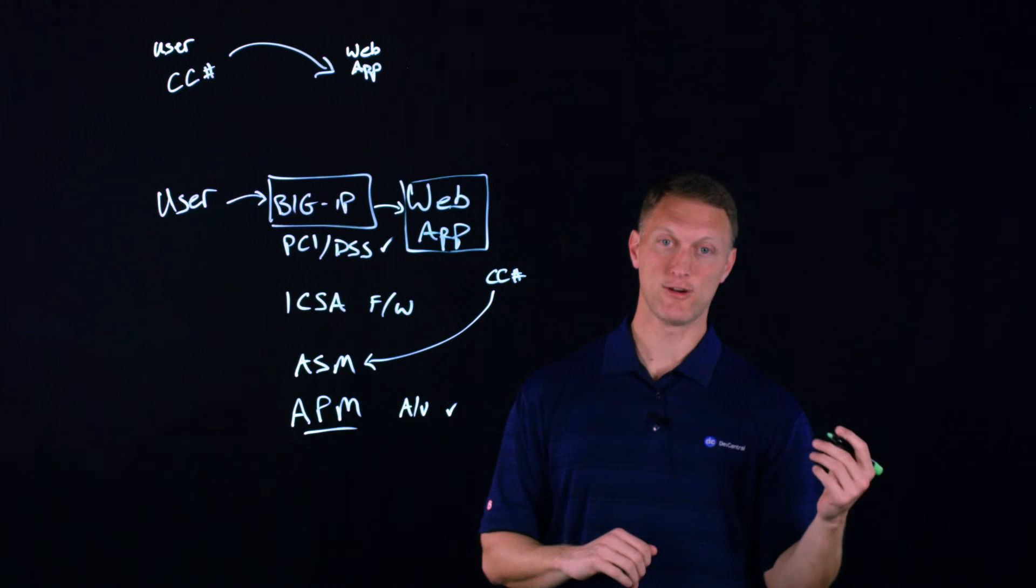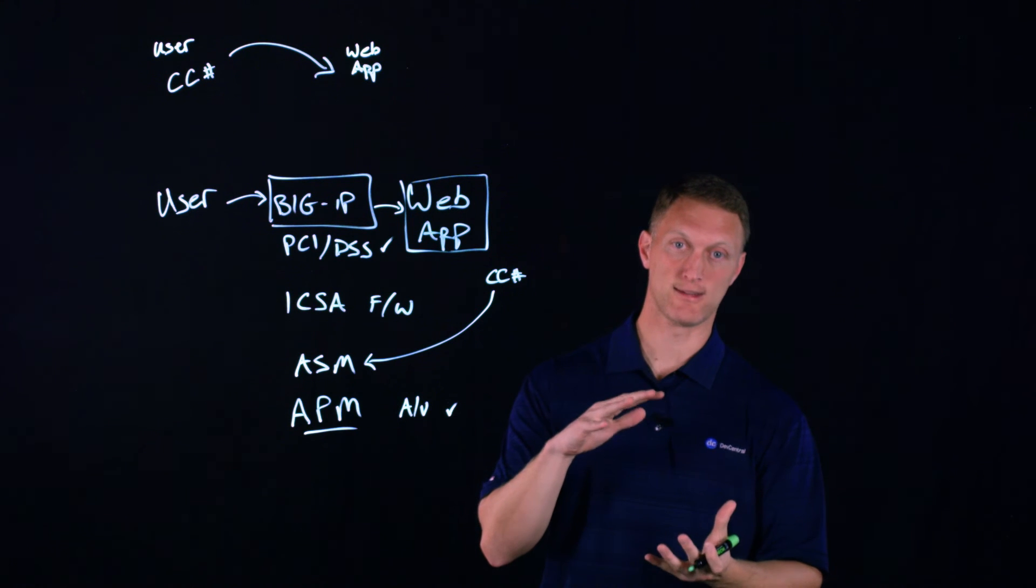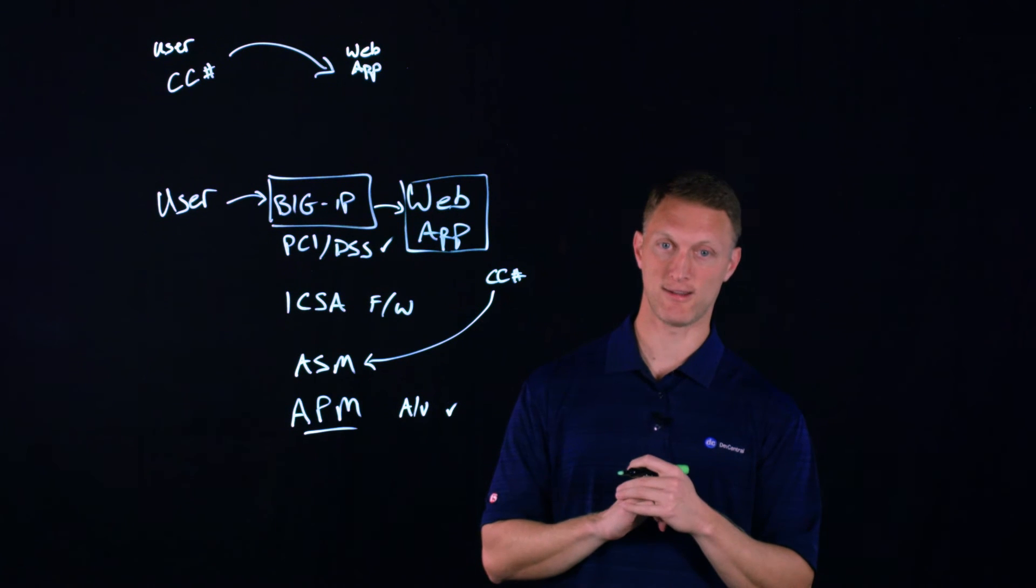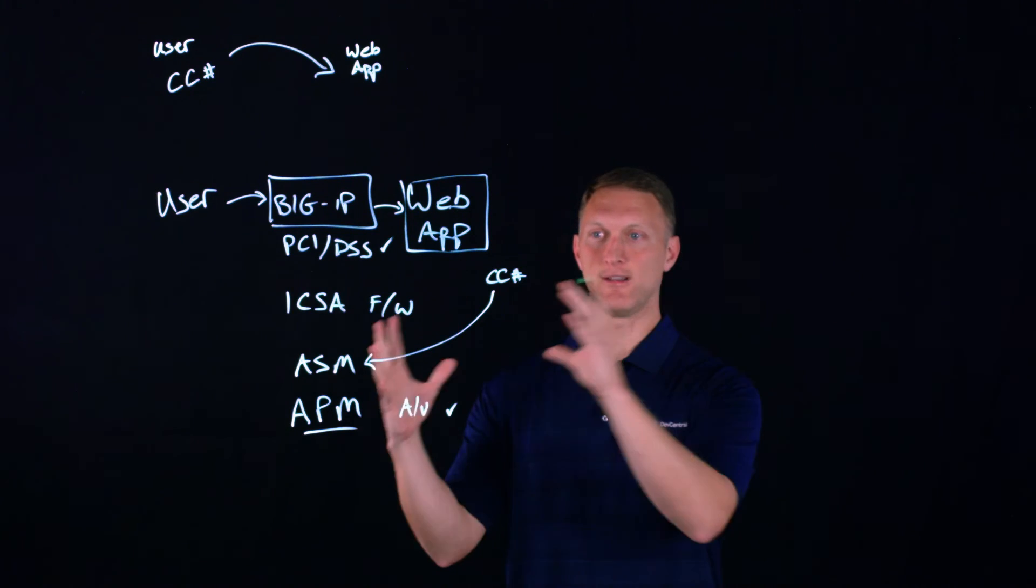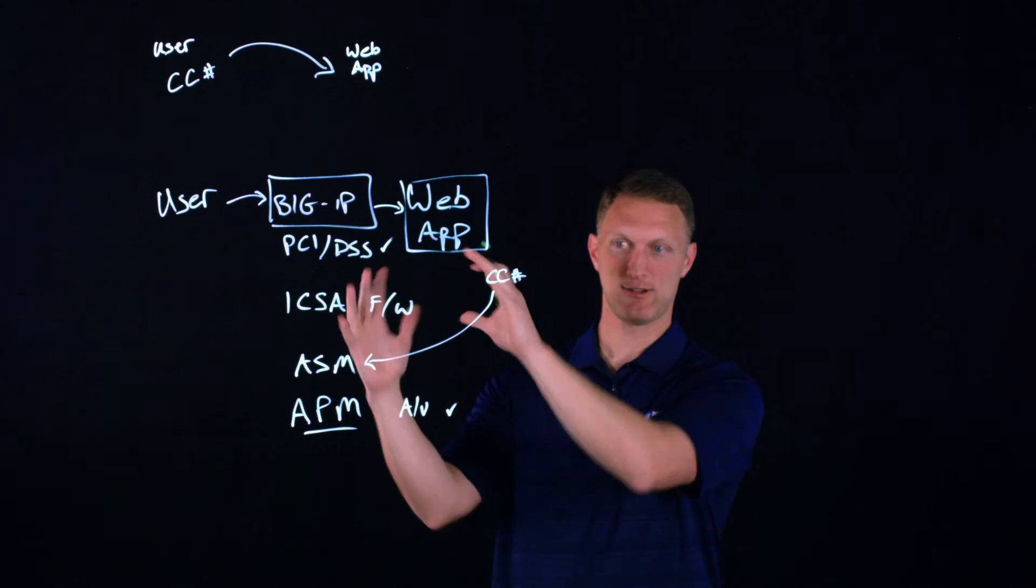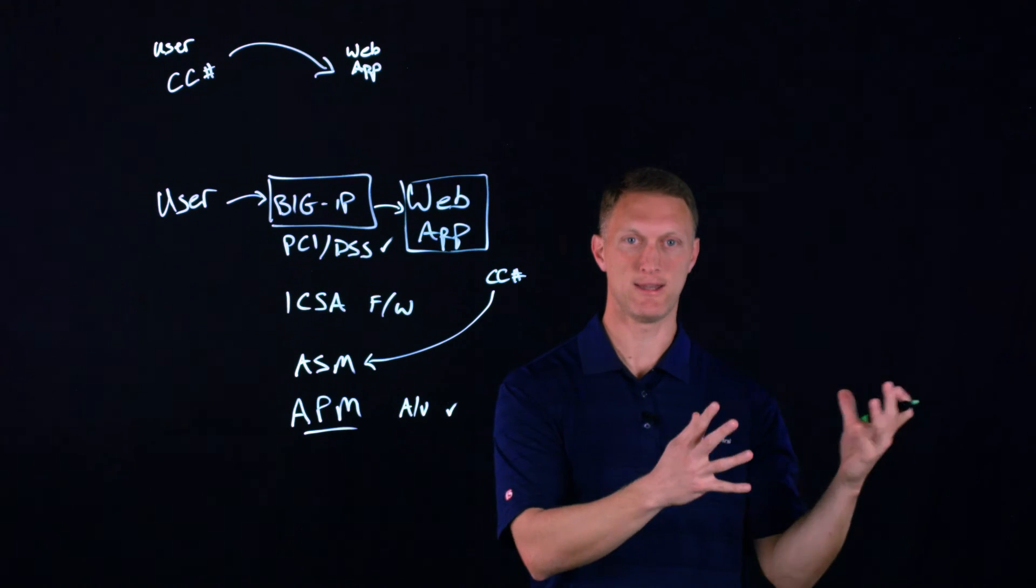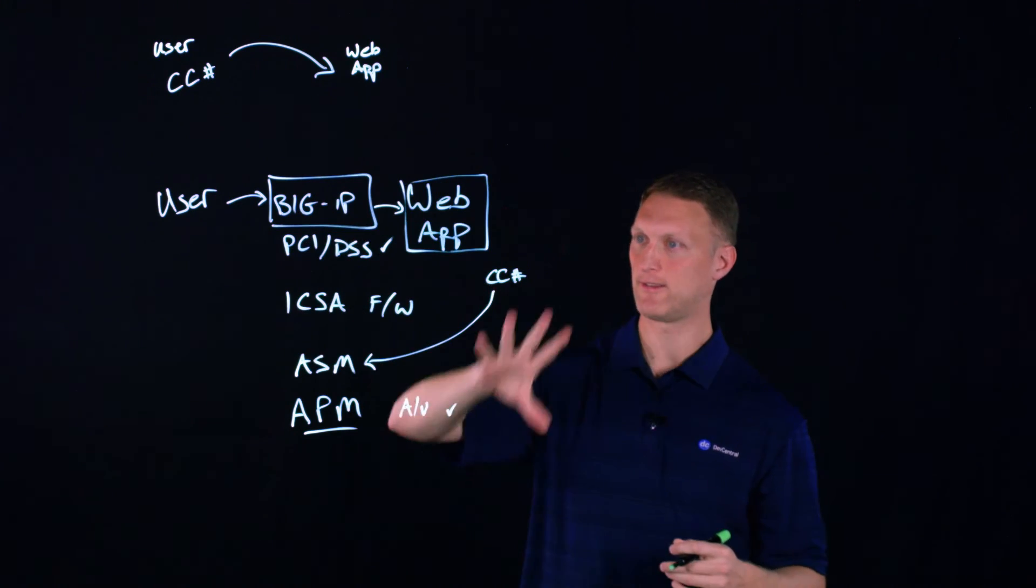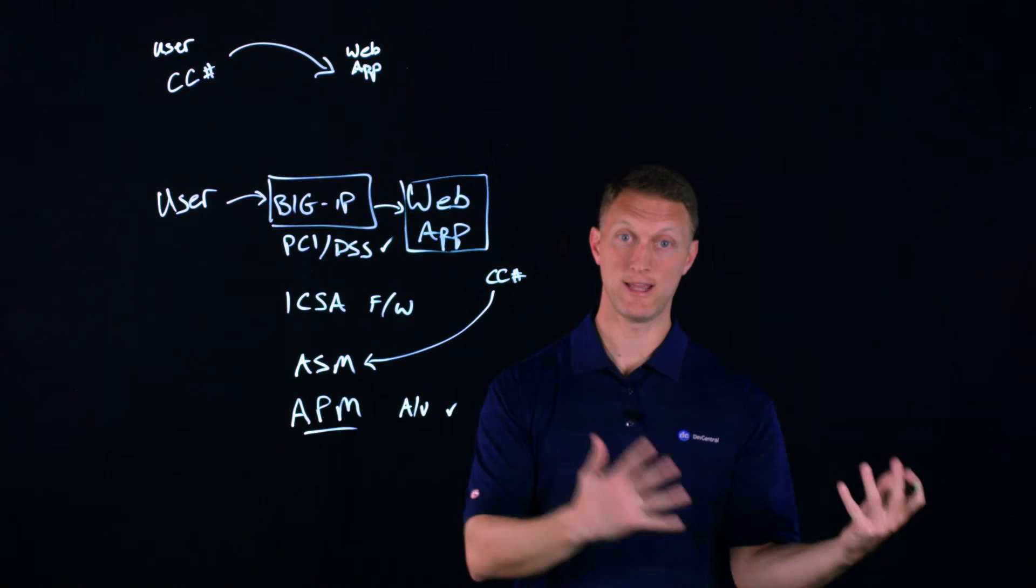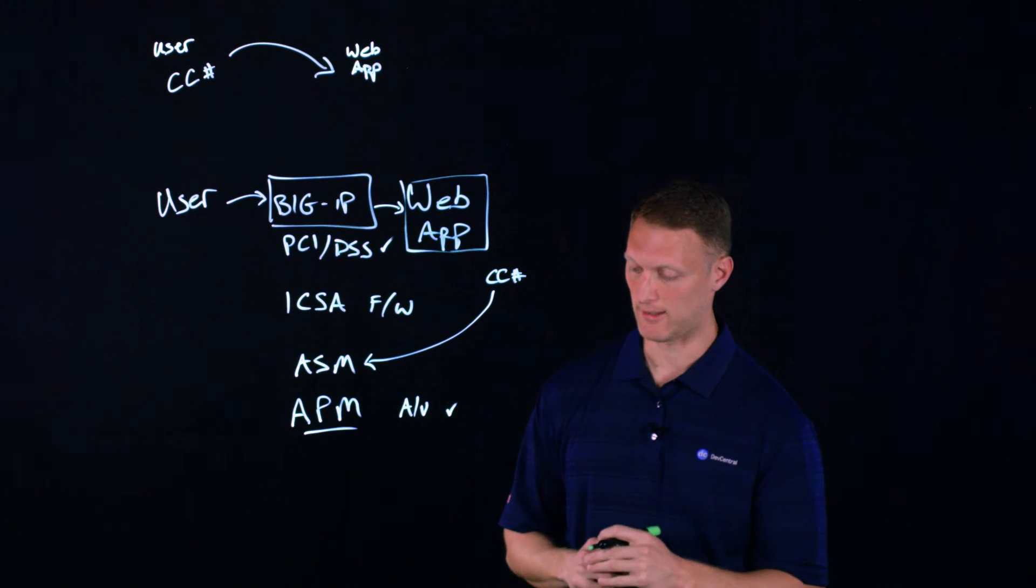And then the last one is maintain a security policy. So that's the last piece that the PCI DSS guys are going to say you need to do. And so that one is, that one's a little less like technology automated thing. That's just a company. Hey, let's get a policy together. But when you put all these other things in place, those can certainly help toward the creation of a security policy.